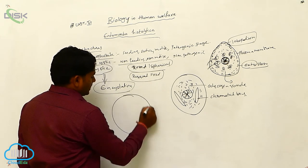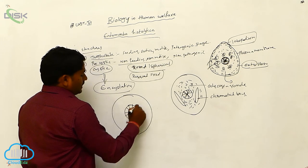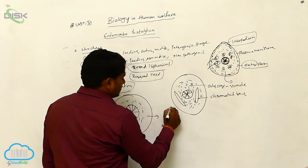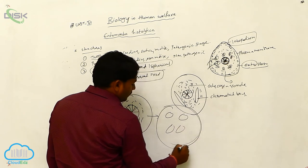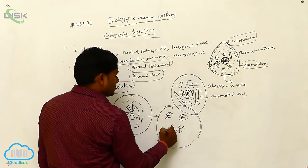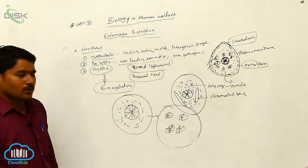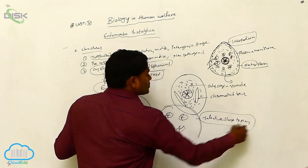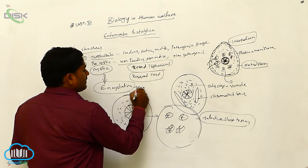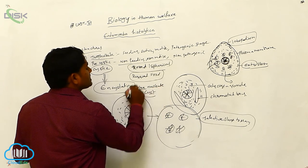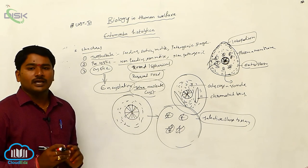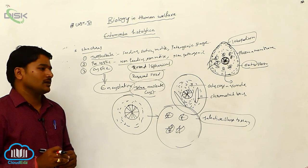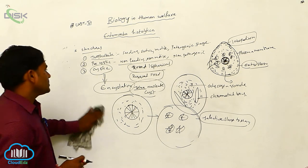After encystation, the nucleus of the cystic stage undergoes two divisions, resulting in a total of four nuclei. This stage is called the tetranucleate cyst — tetra means four, nucleate means nucleus. This tetranucleate cyst is the infective stage to man. Whenever it is transferred through food and water, we get the infection of Entamoeba histolytica.